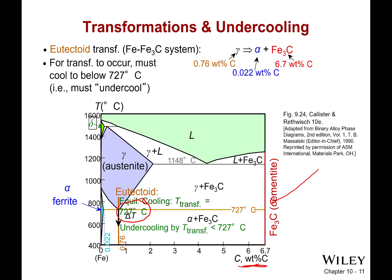Which means that all of the iron you have, all of the steel you have, is going to be some mixture of ferrite and cementite.